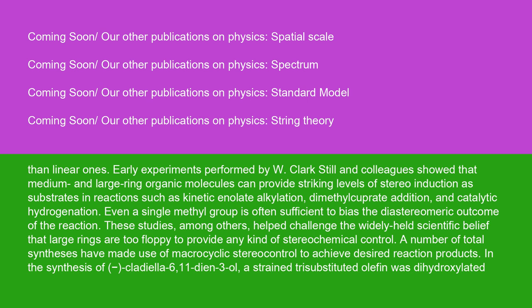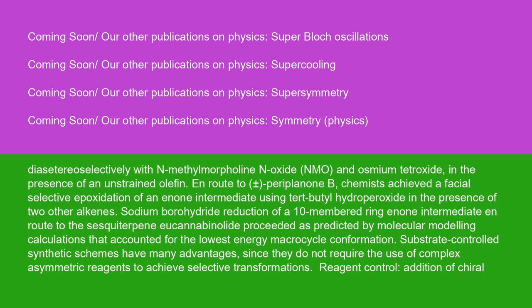A number of total syntheses have made use of macrocyclic stereocontrol to achieve desired reaction products. In the synthesis of minus-cladiella-6,11-dien-3-ol, a strained trisubstituted olefin was dihydroxylated diastereoselectively with N-methylmorpholine N-oxide (NMO) and osmium tetroxide in the presence of an unstrained olefin. En route to plus or minus periplanone B, chemists achieved a facial selective epoxidation of an unknown intermediate using tert-butyl hydroperoxide in the presence of two other alkenes. Sodium borohydride reduction of a 10-membered ring intermediate en route to the sesquiterpene eucannabinolide proceeded as predicted by molecular modeling calculations that accounted for the lowest energy macrocycle conformation. Substrate-controlled synthetic schemes have many advantages, since they do not require the use of complex asymmetric reagents to achieve selective transformations.